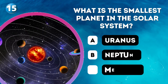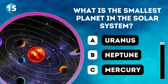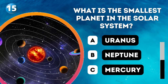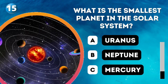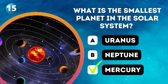Question 15. What is the smallest planet in the solar system? A. Uranus, B. Neptune, C. Mercury. Answer: Mercury.